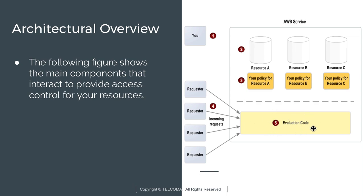This figure shows the main components that interact to provide access control to your resources. We have defined the resources and created the policy for the resources. The incoming requests are evaluated with the help of evaluation code, which determines how the request can interact with or use our resources.